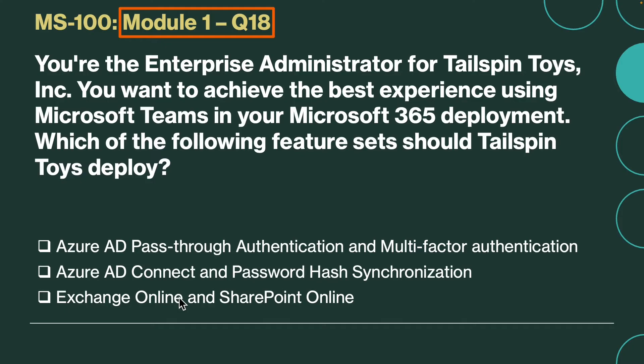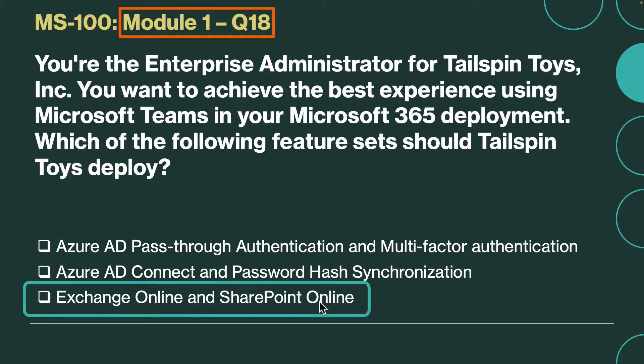Question number 18. You are the enterprise administrator for Tailspin Toys. You want to achieve the best experience using Microsoft Teams in your Microsoft 365 deployment. Which of the following feature sets should Tailspin Toys deploy? Is it Azure AD pass-through authentication and multi-factor authentication, Azure AD Connect and password hash synchronization, or Exchange Online and SharePoint Online? The correct answer is Exchange Online and SharePoint Online. To achieve the best experience using Microsoft Teams, an organization should deploy Exchange Online and SharePoint Online and ensure that its current environment is ready for Teams.